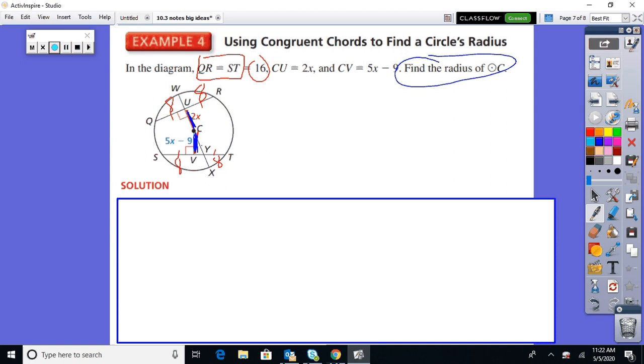Because I want to ultimately find the radius of this thing. I don't even see a radius there. So watch how cool this is going to be. So I can say 2x equals 5x minus 9. To solve for x, I'll subtract 5x's, divide by negative 3. So x is 3.